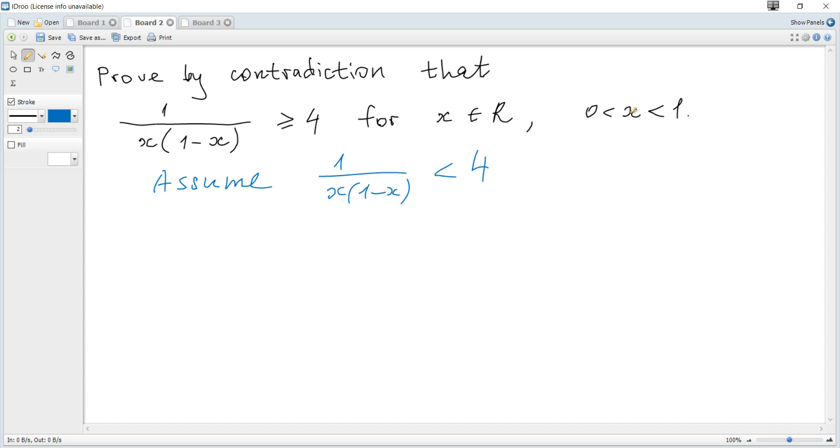Since x is between 0 and 1, x is positive and 1-x is also positive, so the product is positive. We multiply by a positive value, so the sign remains the same. It becomes 1 is...